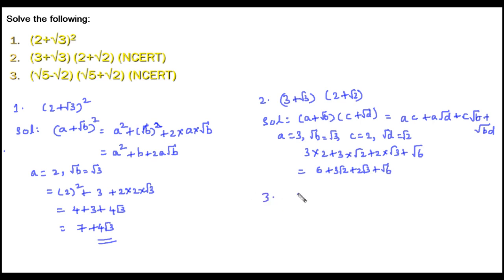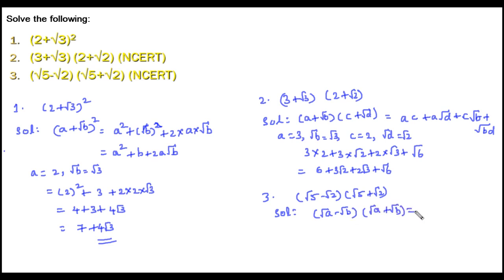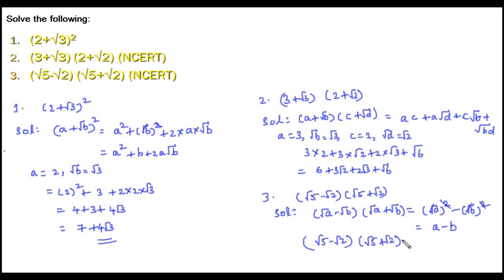The third question is root 5 minus root 2 into root 5 plus root 2. This is in the form of a plus b into a minus b, where a is root 5 and b is root 2. Using the identity root a minus root b into root a plus root b equals root a squared minus root b squared, and canceling square root and square, it becomes a minus b. So root 5 squared minus root 2 squared gives 5 minus 2, that is equals to 3.